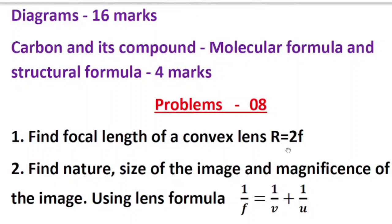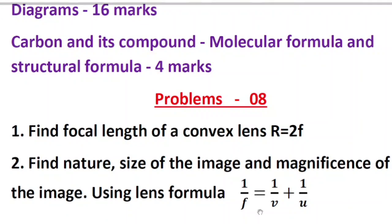The second question is: find the nature, size, and magnification of the image. This is very very important because they are going to ask for two to three marks. You use the lens formula: 1/f = 1/v + 1/u. Using this formula, you calculate the nature of the image and magnification. This is a compulsory question from the light chapter, so concentrate and practice — without practice you cannot score.